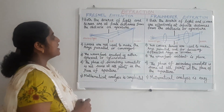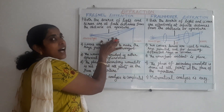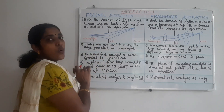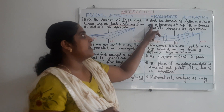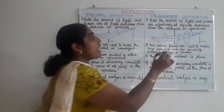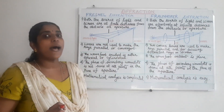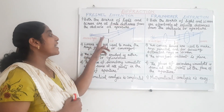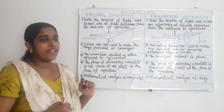In Fresnel diffraction, the source of light and the screen are both at a finite distance from the obstacle or aperture. So in Fresnel diffraction, the distance between the source of light and the slit is finite, and also the distance between the screen and the slit is finite.